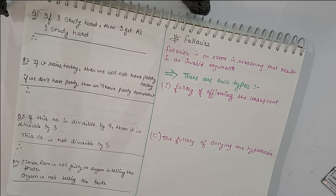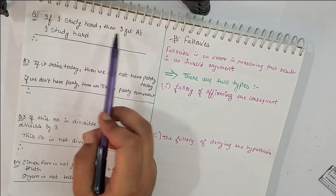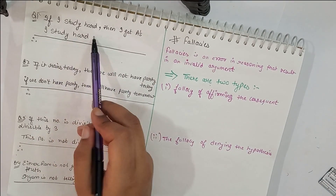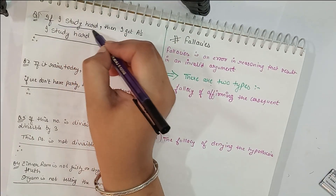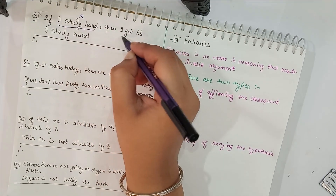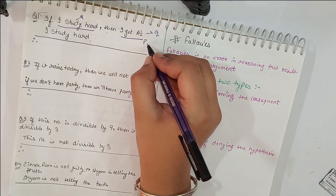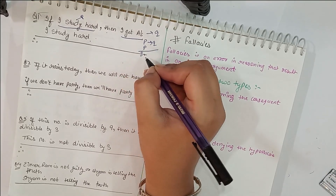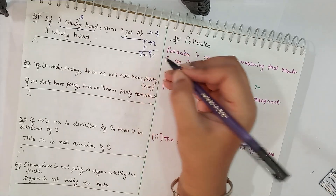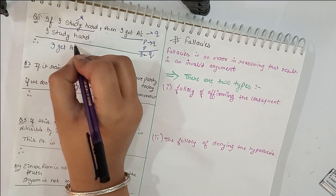Let's practice with some examples. Question 1 says: if I study hard then I get an A, and I study hard — guess the conclusion. If we say 'I study hard' is P and 'I get an A' is Q, then we have P implies Q, and P, so the conclusion will be Q. According to Modus Ponens, the answer is: I get an A.